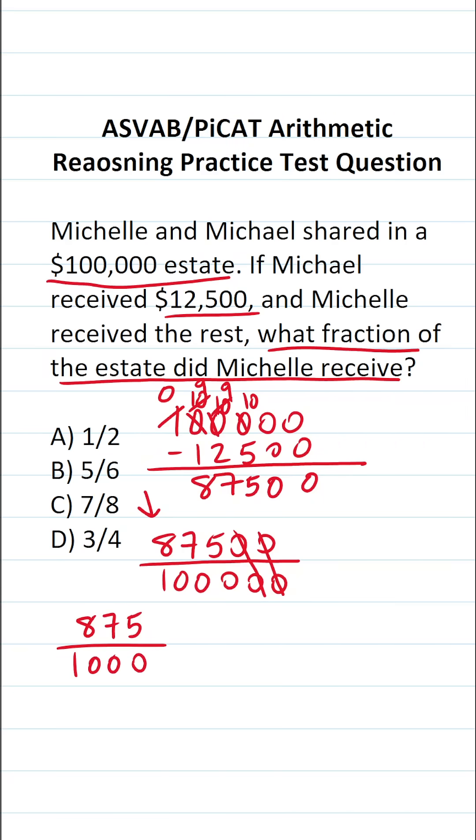In terms of reducing fractions, this can be a little bit difficult. That said, I'm going to say 875 and 1000 are both divisible by 25. 100 divided by 25 would be four. Therefore, 1000 divided by 25 is 40. Now let's go ahead and work this one out.